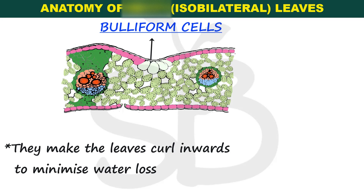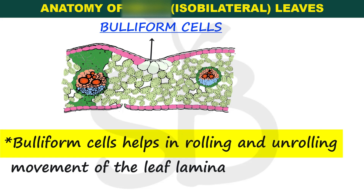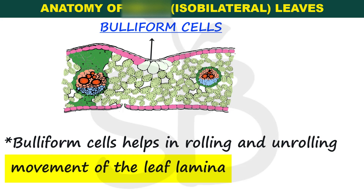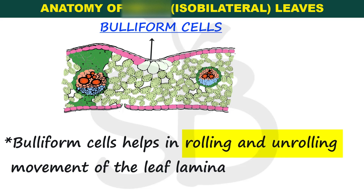The bulliform cells are located in the upper epidermis, that is the adaxial epidermis. Bulliform cells help in the rolling and unrolling movement of the leaf lamina. The leaf lamina rolling and unrolling movement is controlled by the bulliform cells.